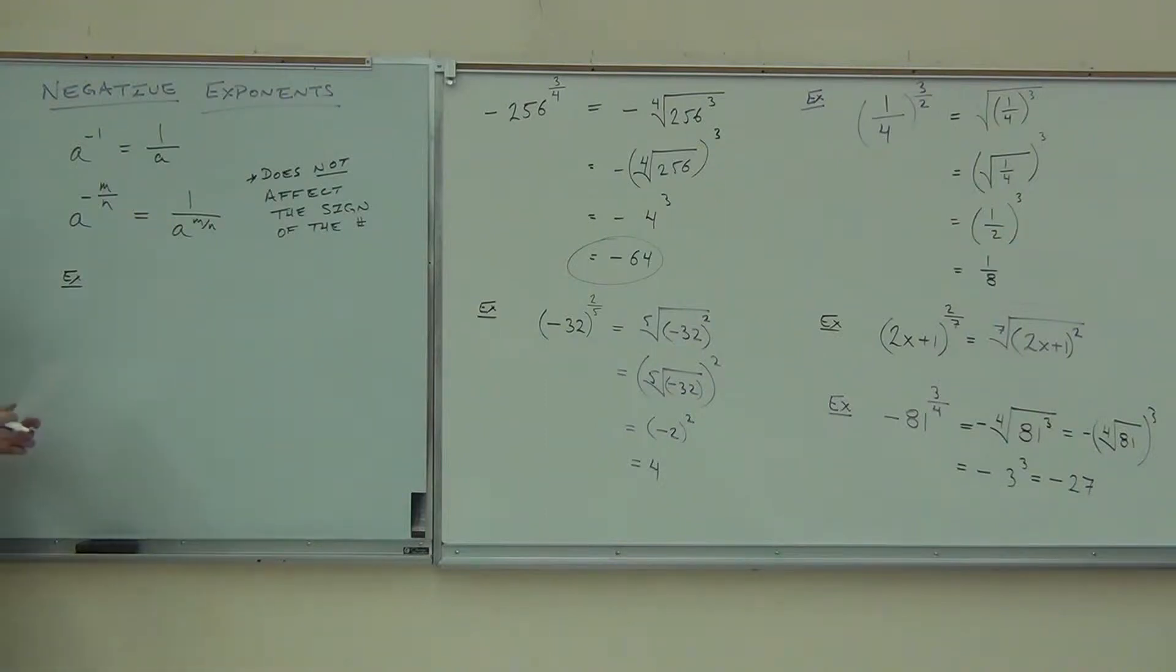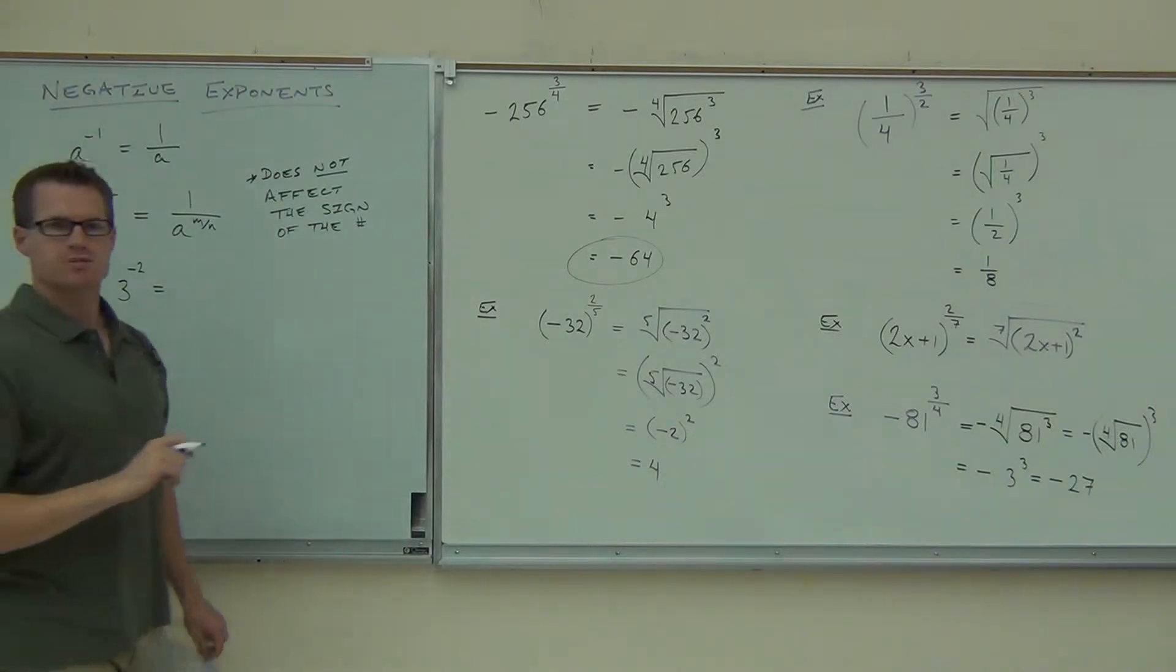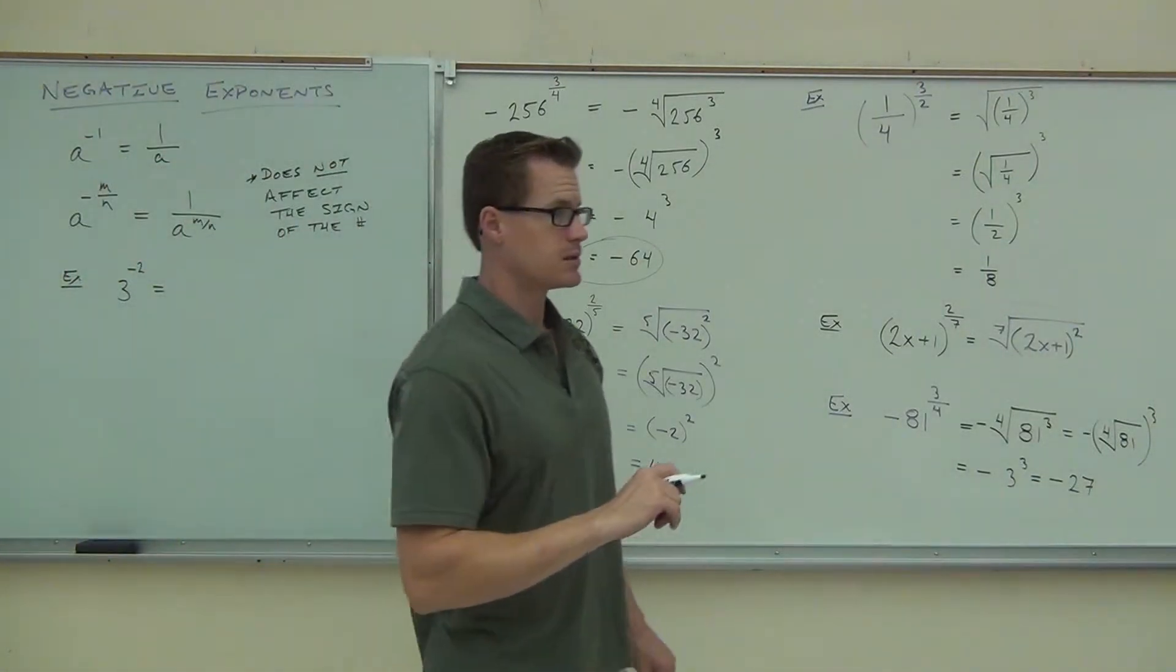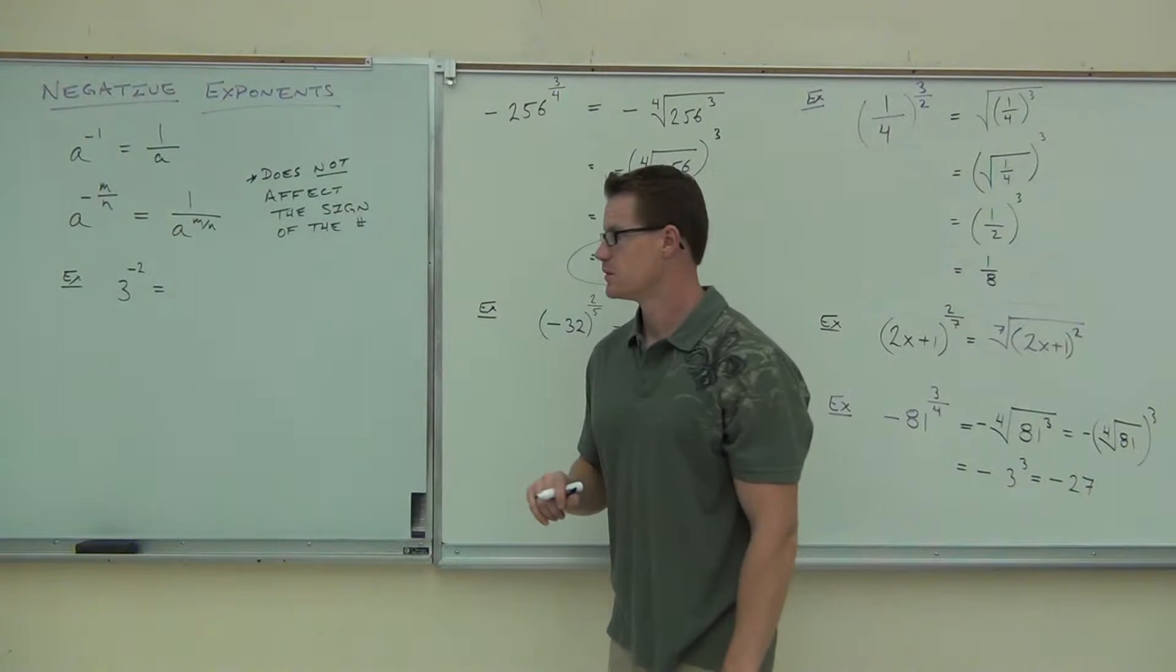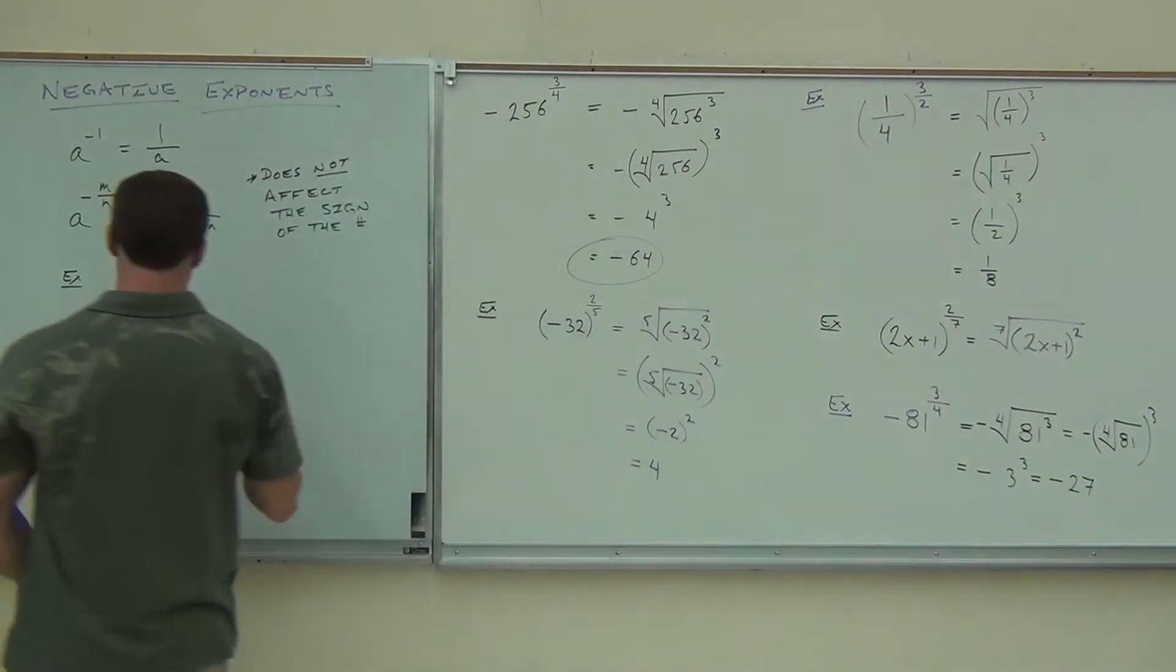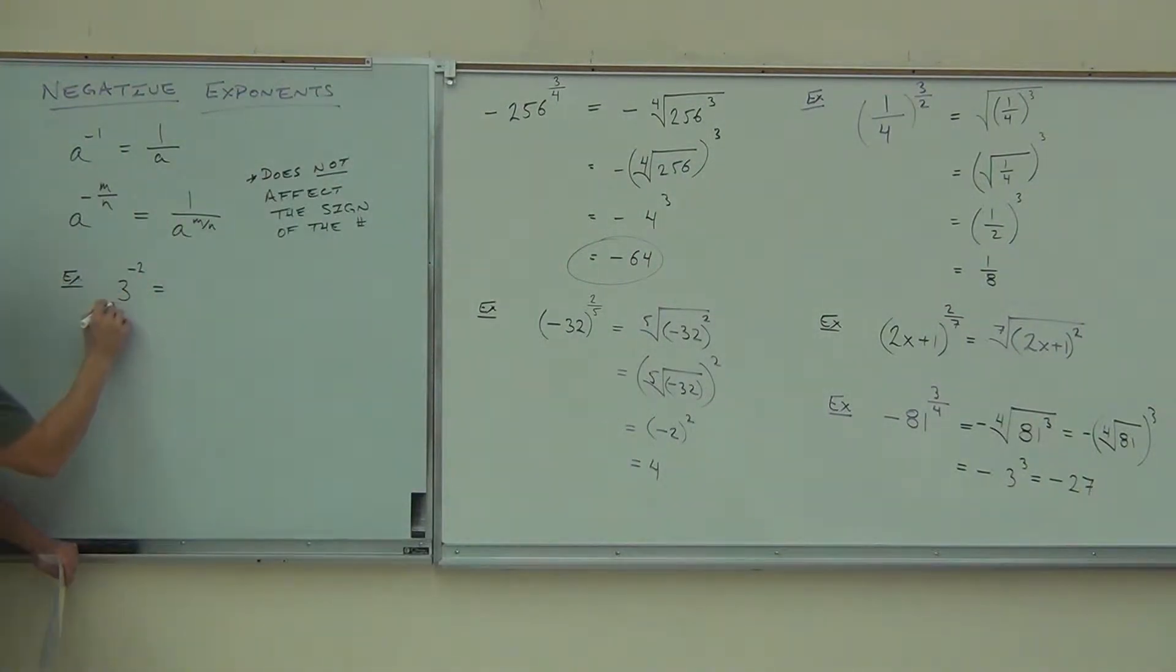A few examples. Let's do 3 to the negative 2. If I want to change 3 to the negative 2 into a positive exponent, what do I have to write? Okay, good. So this is like a numerator right now, like 3 to the negative 2 over 1. So if I'm going to make this into a fraction where this is a positive exponent, I'm going to move this from the top, our numerator, to our denominator.